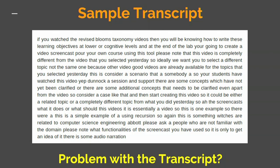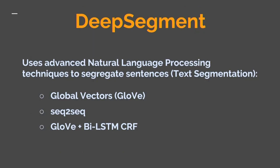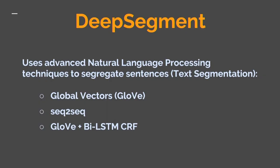Now we have our transcript generated, but there is a problem: the transcript has no punctuation. Since we need to find operational and non-operational sentences, we must first identify where sentences are. We perform text segmentation using Deep Segment, a natural language processing-based technique. It is based on word embeddings using GloVe vectors supported by Stanford, and uses sequence-to-sequence models along with bidirectional LSTMs to segment the text.